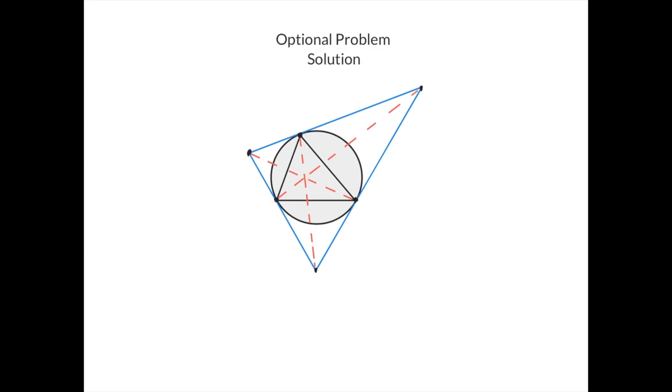And here is the solution. Consider this triangle. This circle is its incircle because it's tangent to all of its sides. And therefore, this line, this line, and this line intersect at the Gergonne point for this triangle. And hence, we're done.